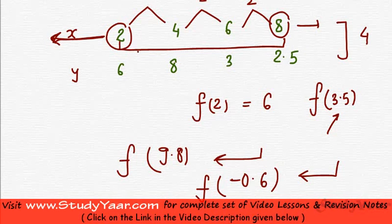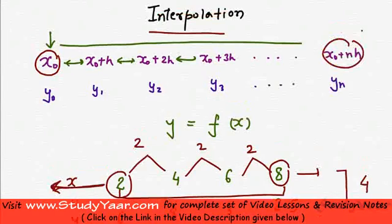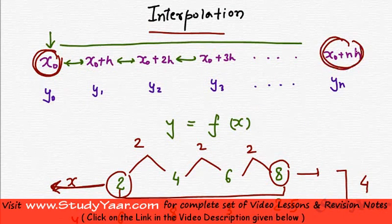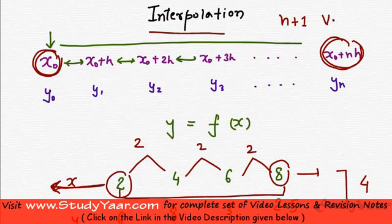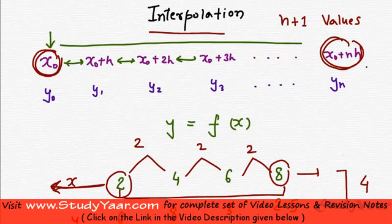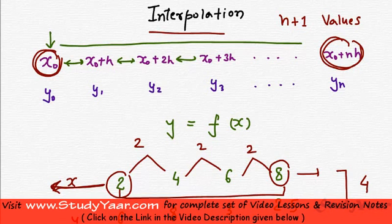Interpolation is finding out the value of y at a certain x between x0 and x0 plus nh, where you have n plus 1 values known to you. You are starting off with 0 and ending up at n, therefore you have n plus 1 values given to you. Using these n plus 1 values and interpolation techniques, you should be able to find out y for any x between x0 and x0 plus nh.